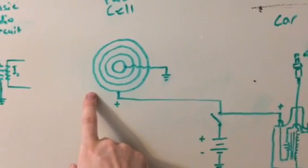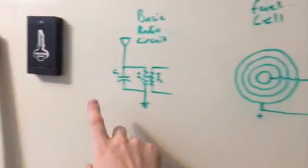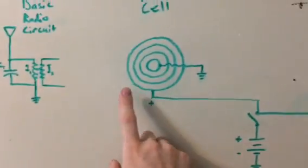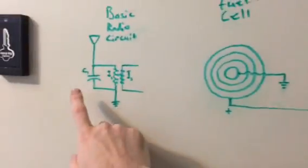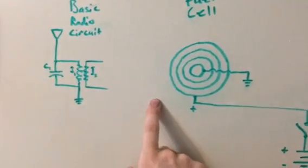The tubes being concentric act as capacitors, so there's your capacitor component. And the tubes being alloy act as your antenna. So you have your antenna and your capacitor.